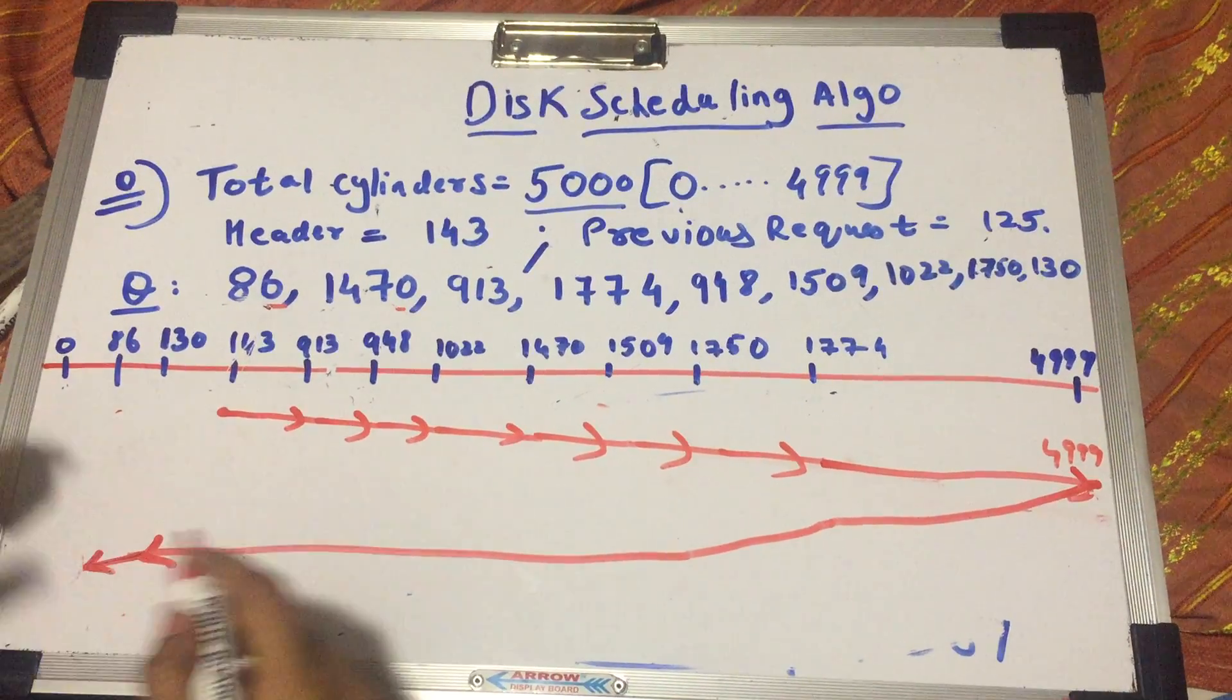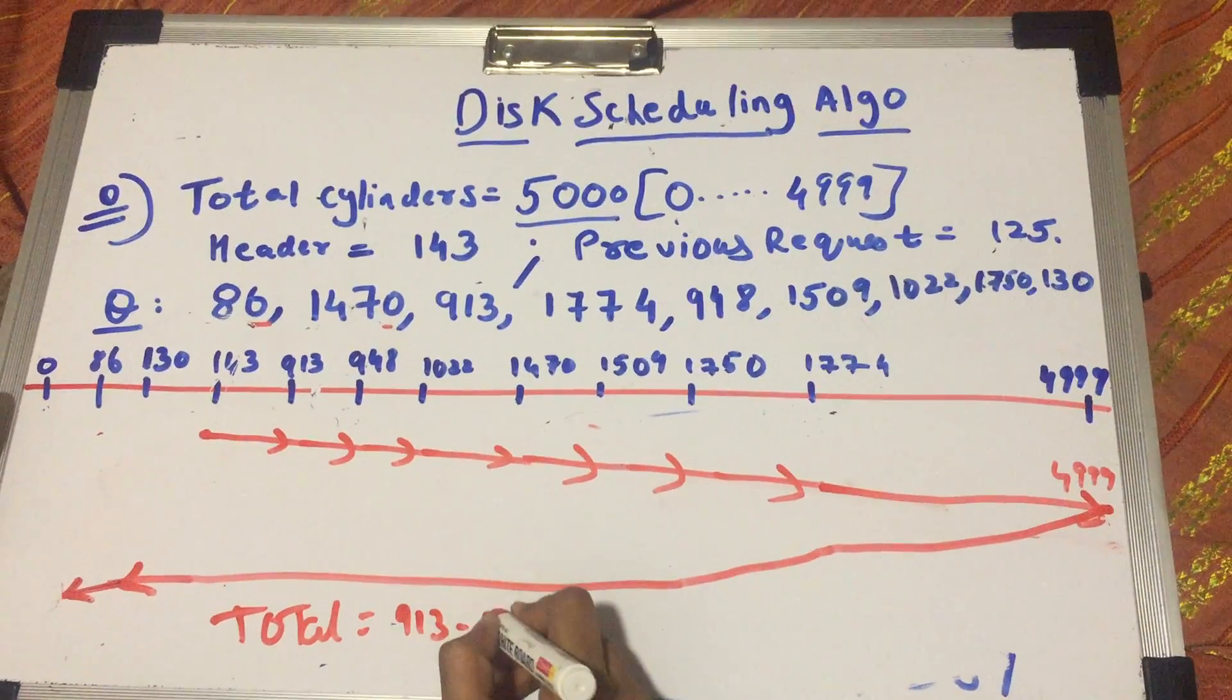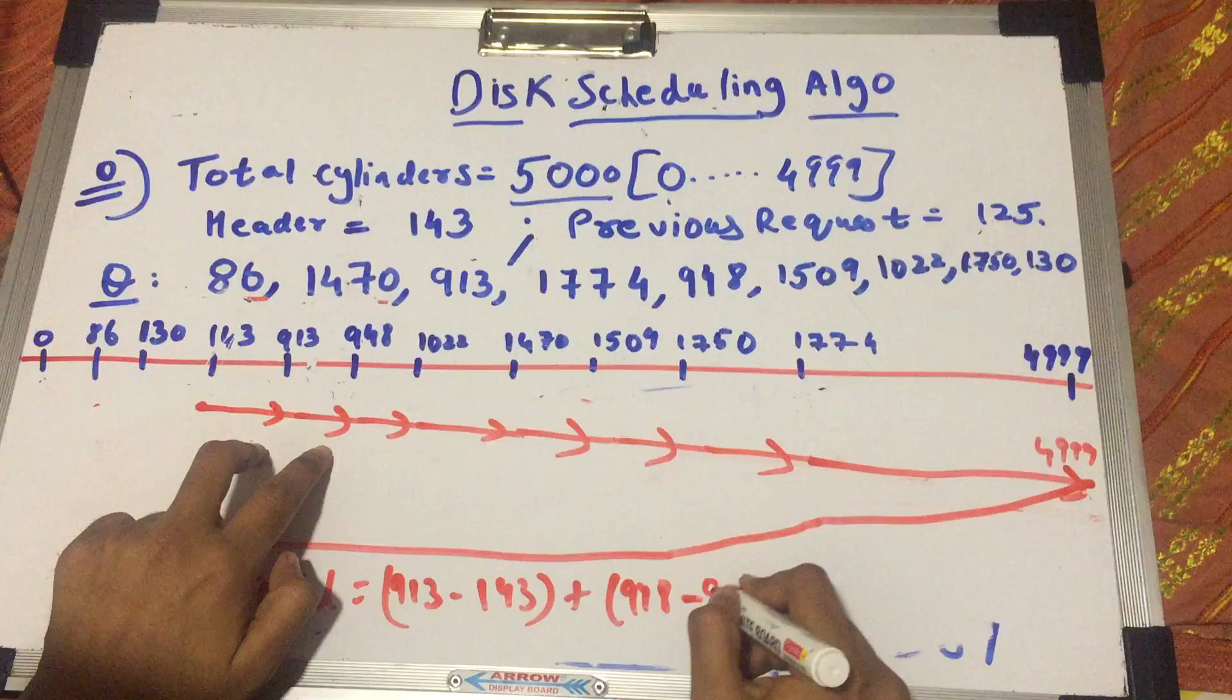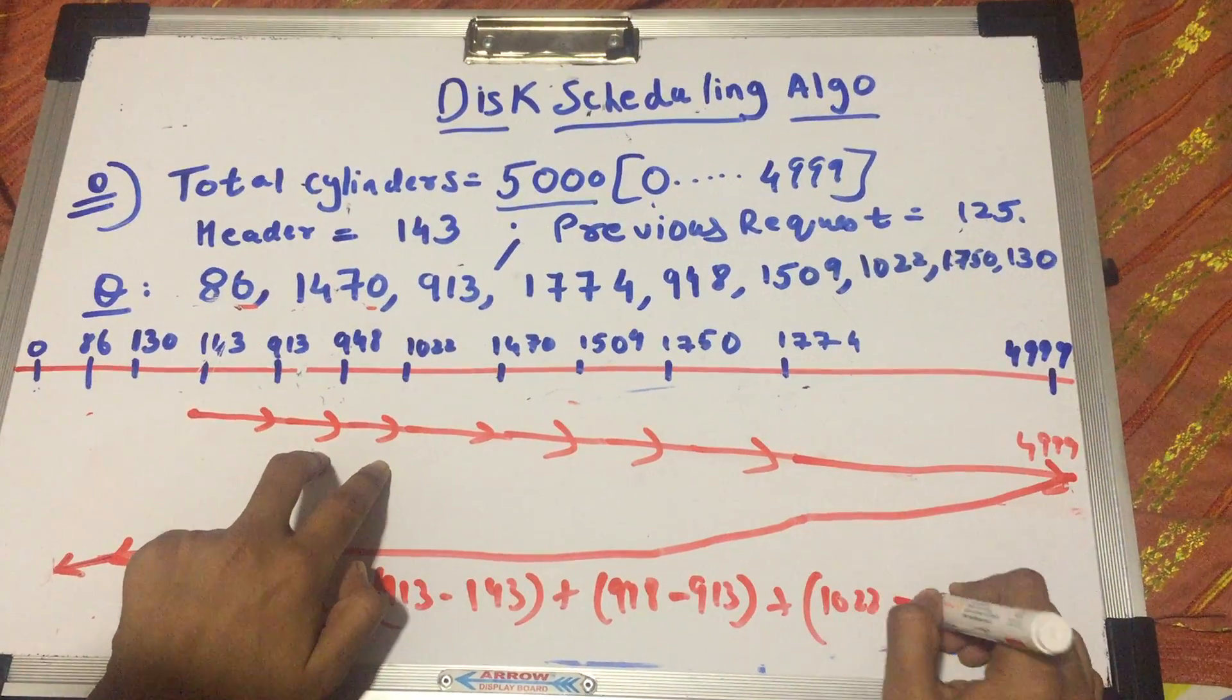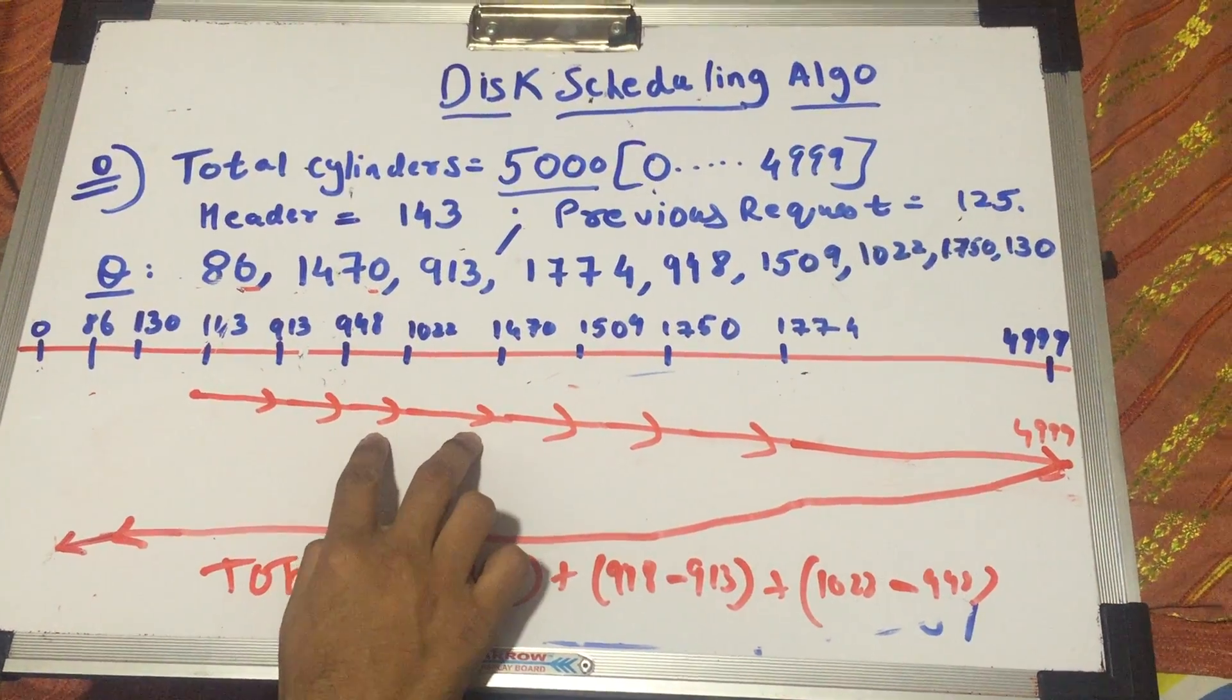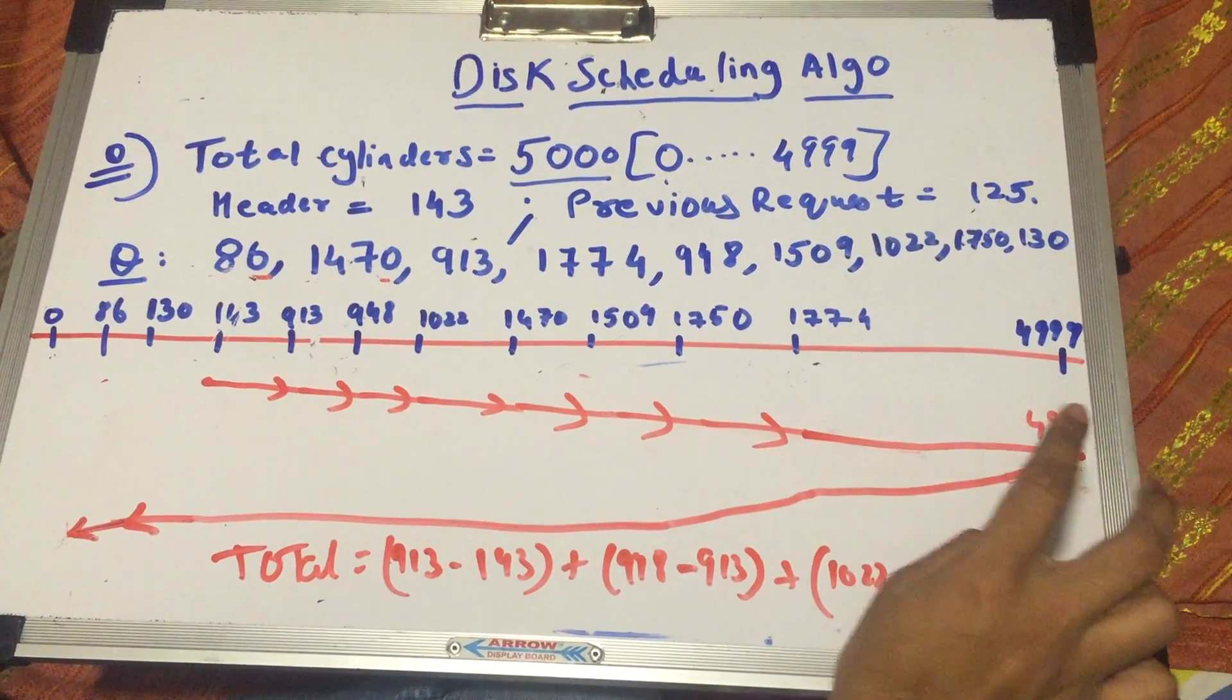So what's the total seek time? In the SCAN algorithm, it will be equal to 913 minus 143, plus 948 minus 913, plus 1022 minus 948. You go on doing this: 1470 minus 1022, 1509 minus 1470. But when you reach here, you have a confusion. What to do about the 4999?